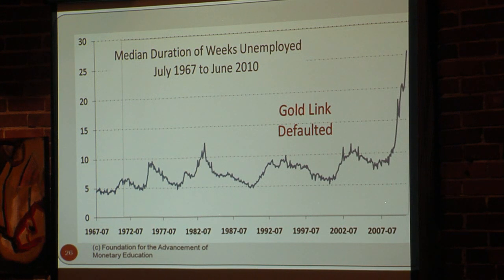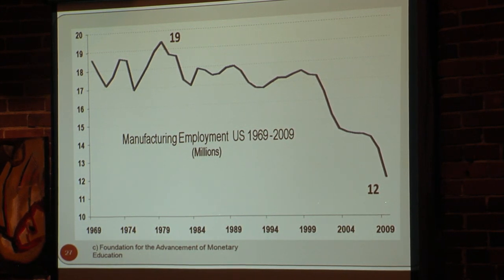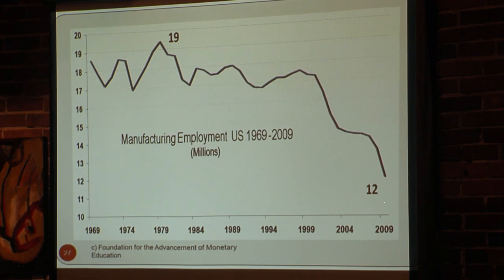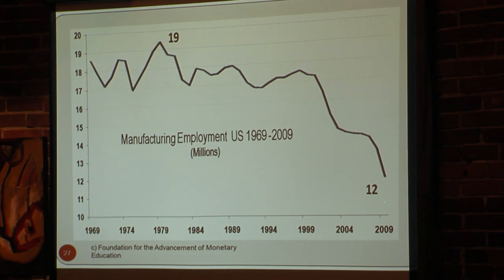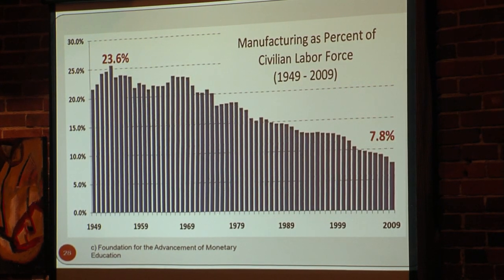This country used to be the powerhouse of manufacturing. The United States was considered the arsenal of democracy, and we won World War Two. Look what happened to manufacturing employment after the tie to gold was broken — it used to be something like 19 million, today it's something like 12 million. The other side says there's been a lot of automation — true, but about 50,000 factories have closed and all that automation has moved to China. All the iPads and iPods from Apple are not made in America; they're made in China.